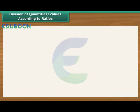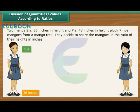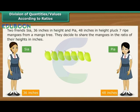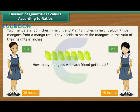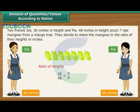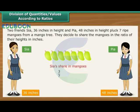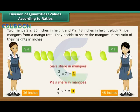Division of quantities and values according to ratios. Let us now use ratios to divide quantities and values. Two friends, Sia, 36 inches in height, and Pia, 48 inches in height, pluck 7 ripe mangoes from a mango tree. They decide to share the mangoes in the ratio of their heights. The ratio of their heights is 3 is to 4. It means that out of every 7 mangoes plucked, 3 will be eaten by Sia and 4 by Pia. Sia gets 3 out of 7 mangoes; Pia gets 4 out of 7 mangoes.